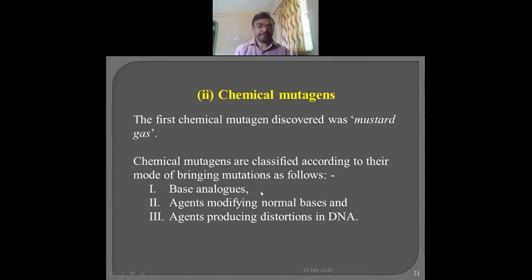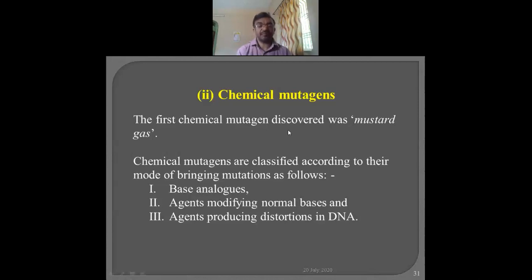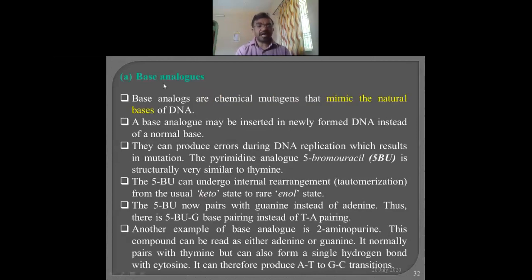We have now discussed two types of physical mutagenic agents. Now we turn to chemical mutagens. The mustard gas, used in World War II, was the first discovered chemical mutagen — the first time humans became aware that chemicals can affect DNA. Nowadays mustard gas is never used. Chemical mutagens are classified based on: base analogs, agents which modify normal bases, and agents which produce distortion in the overall DNA structure.